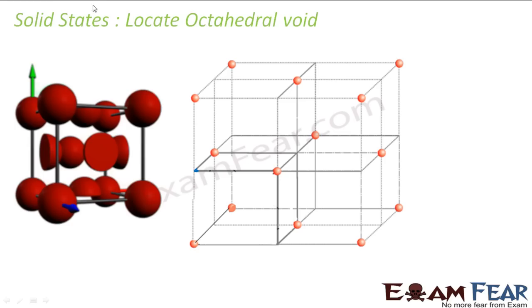Also, if you observe, there are 12 edges in a cube — 1, 2, 3, 4 on this side, and counting up to 12 total. Each of these 12 edges is actually surrounded by six atoms — three from this same unit cell and three from adjacent unit cells. So each edge center hosts one octahedral void as well.